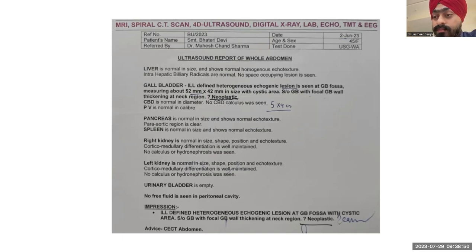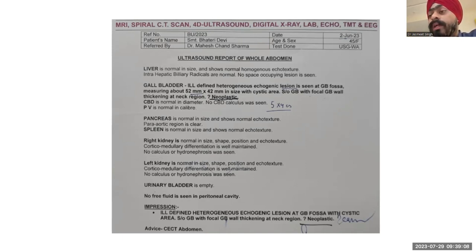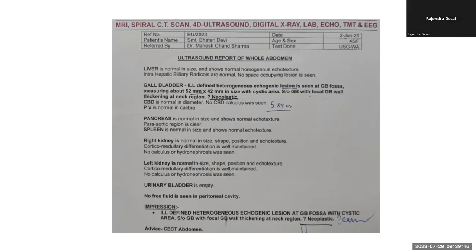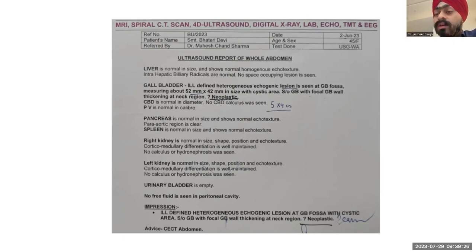How much liver would you remove in a case of neck GB carcinoma? It depends on the invasion of the liver. Studies show we need to achieve an R0 resection, which can be achieved by either a 2 cm wedge resection, segment 4b and 5 resection, or a modified right extended hepatectomy. For an extended right hepatectomy, we need to ensure the bilirubin level is less than 3 as per Japanese guidelines, and we need a CT volumetry to look at the future liver remnant (FLR) quality.